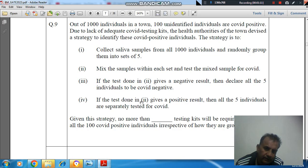4. If the test done in step 2 gives a positive result, then all 5 individuals are separately tested for COVID. Given this strategy, no more than blank testing kits will be required to identify all 100 COVID positive individuals irrespective of how they are grouped.